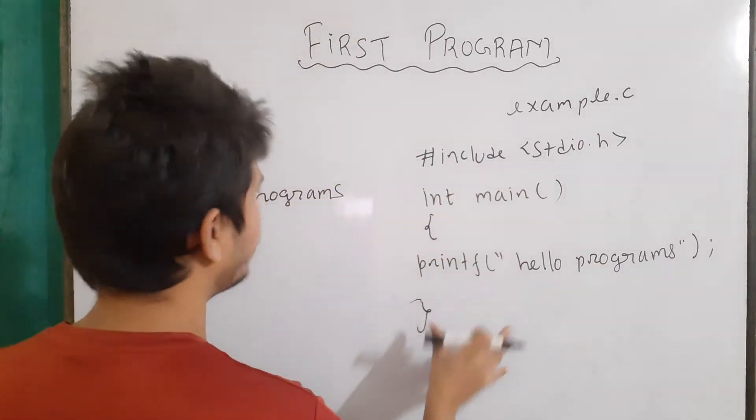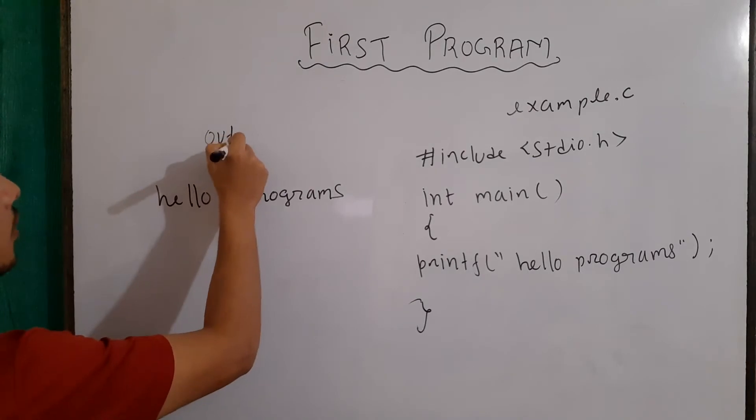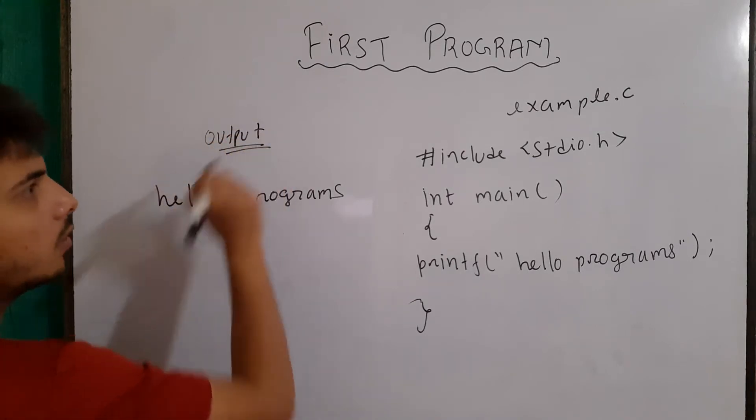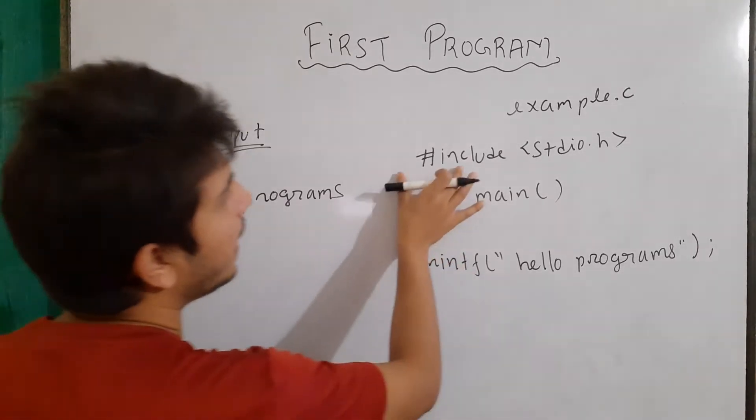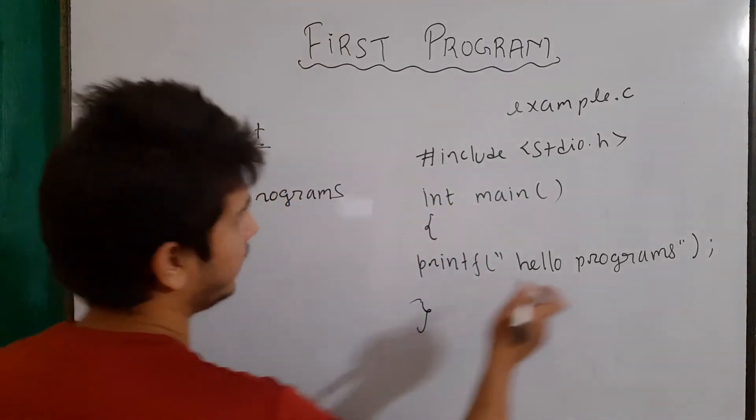Now we have our program and its output. This is our output of our program. So what exactly happened here? First of all, we write hash include stdio.h. Now what happened with this line?